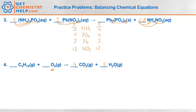Now for oxygens: two on the left. On the right, four times two is eight plus five times one is thirteen — so thirteen oxygens on the products. There isn't a whole number that turns two into thirteen; the answer is six and a half. To get rid of the fraction, we multiply the entire equation by two: two butanes, thirteen oxygens, eight carbon dioxides, and ten waters.